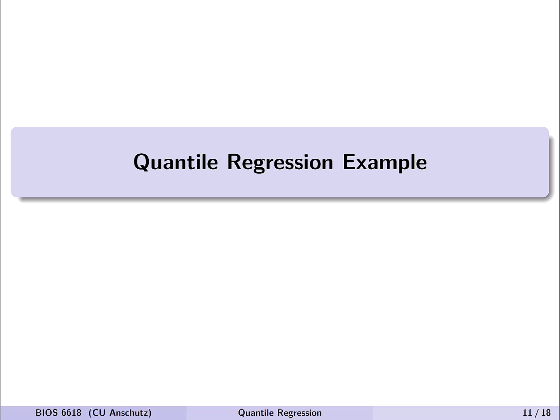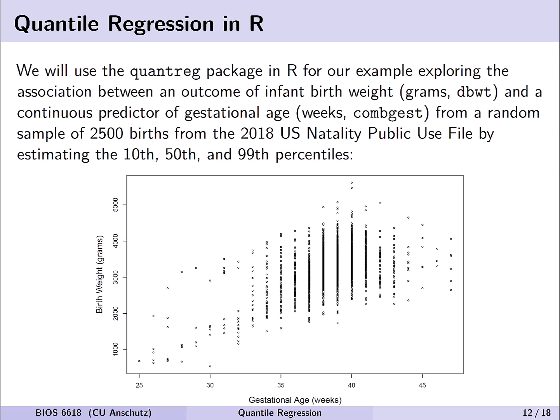So with this background and information, let's walk through a brief quantile regression example in R. Now to do this, we'll use the quantreg package for our example, which is going to explore the association between infant birth weight in grams, which is the dbwt variable of this data set, and a continuous predictor of gestational age in weeks from a random sample of 2500 births from the 2018 US natality public use file. And we're going to be estimating the 10th, 50th, and 99th percentiles of this distribution. We see below here in the distribution of the data that we might have some concerns about the spread of the data where it looks like there potentially is a slight fan shape, possibly, although there is sparse data towards the lower gestational age weeks. And we may have some other concerns about trying to model or interest in modeling what the highs or lows may be, that 10th or 99th percentile of birth weight given a gestational age.